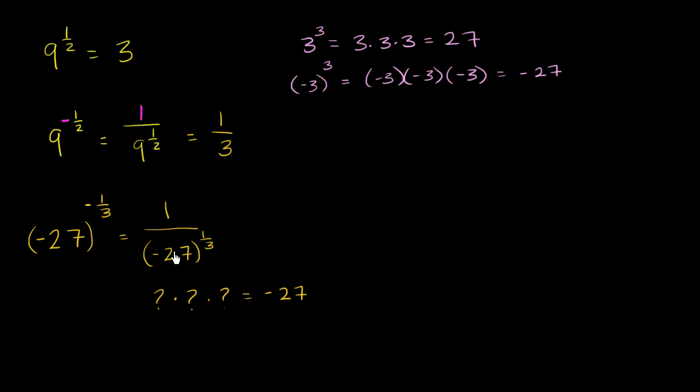So negative 27 to the 1/3, this part right over here, is equal to negative 3. So this is going to be equal to 1 over negative 3, which is the same thing as negative 1/3.